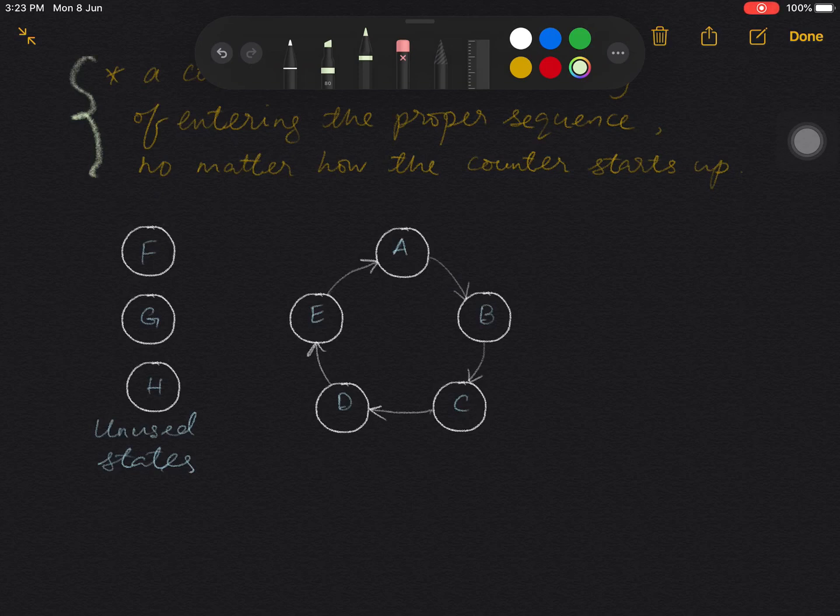If the initial state is one of the used states, you don't have to worry because the system already enters the correct counting sequence. For example, if the initial state is state C, then it will go through the correct sequence C, D, E, A, B, C, D, E, and so on.